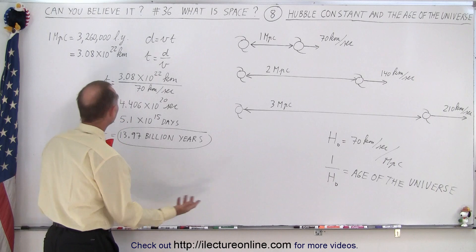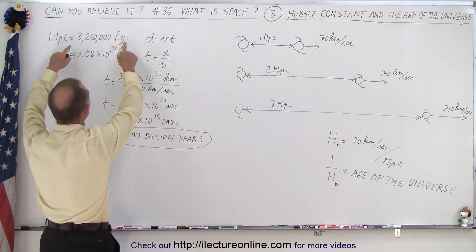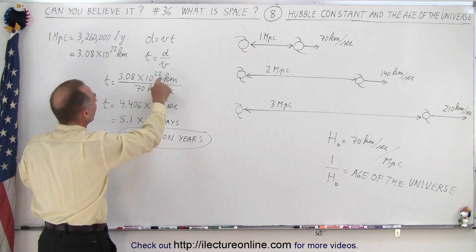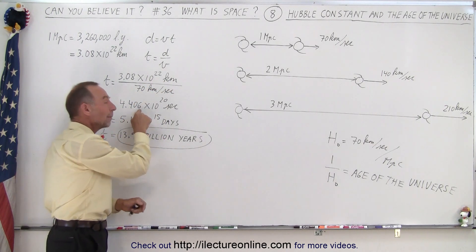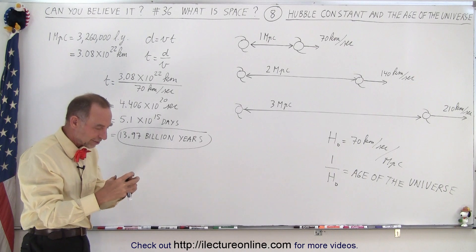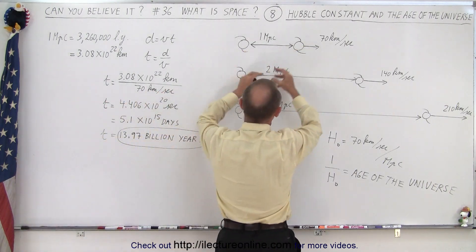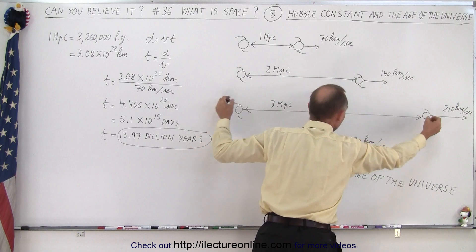In other words, if we take, for example, that two galaxies are this far apart in kilometers, and we divide that by the speed of 70 kilometers per second, that tells us how many seconds it took for two galaxies to be that far apart. These two galaxies, these two galaxies, these two galaxies.